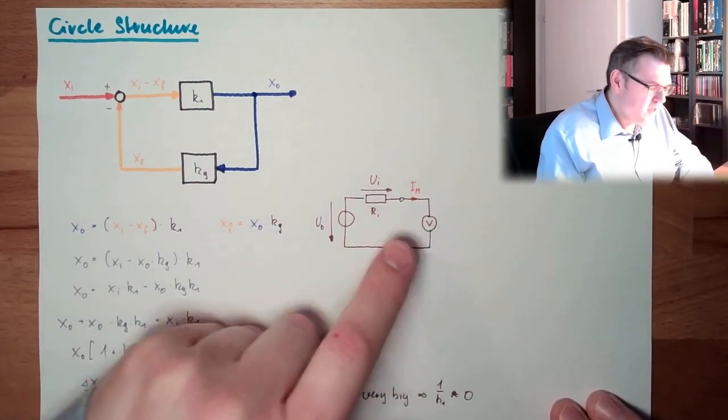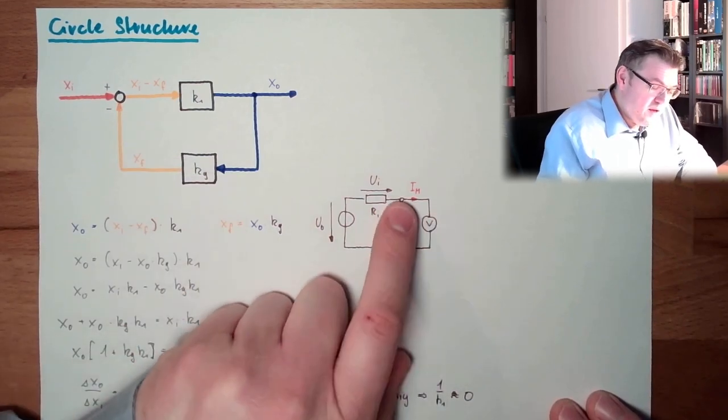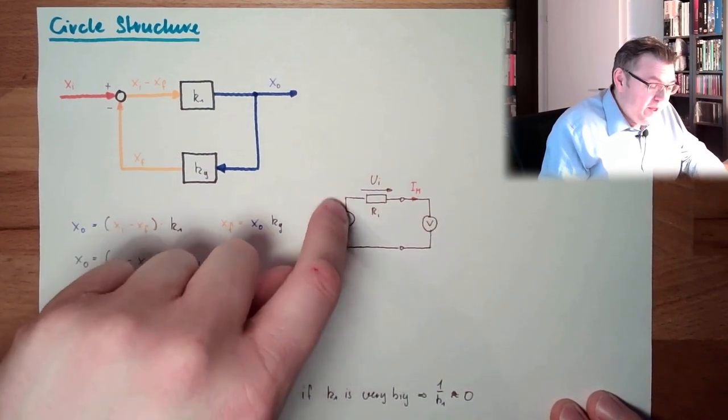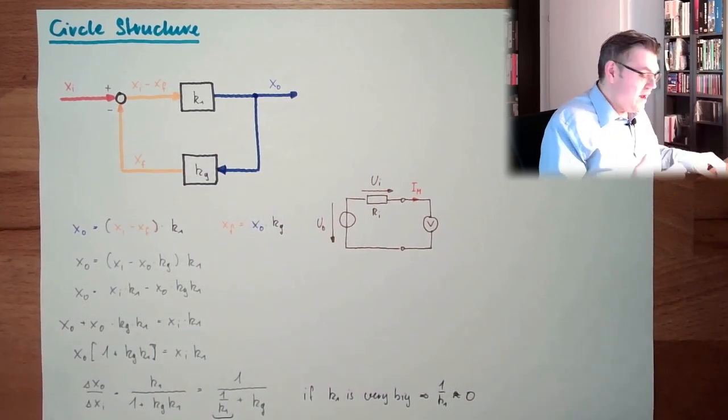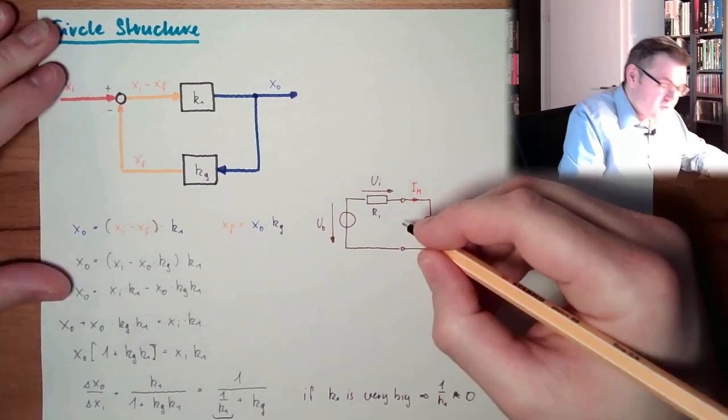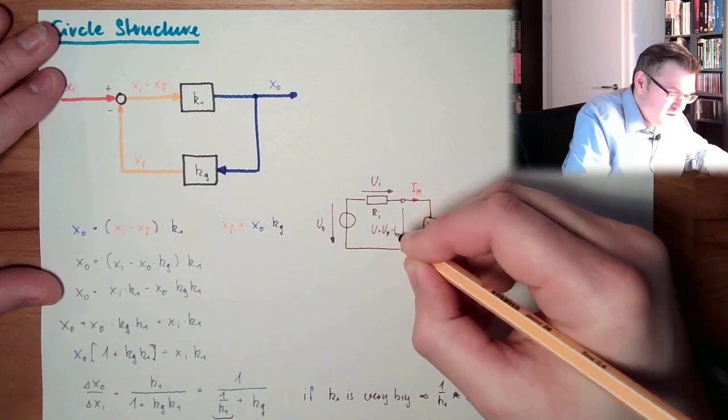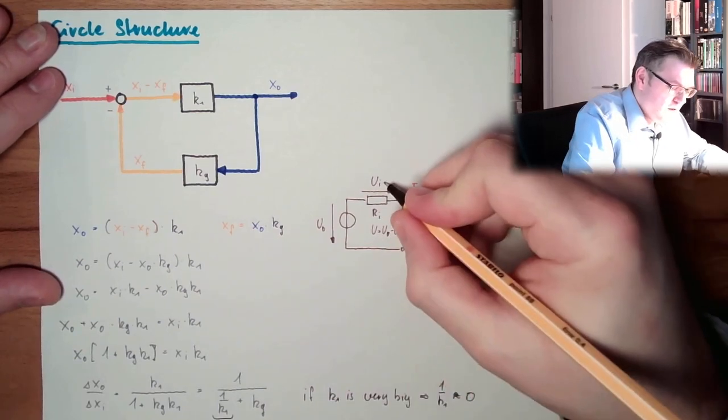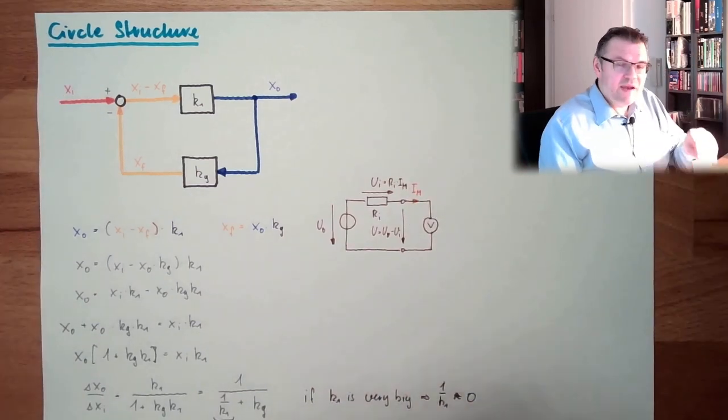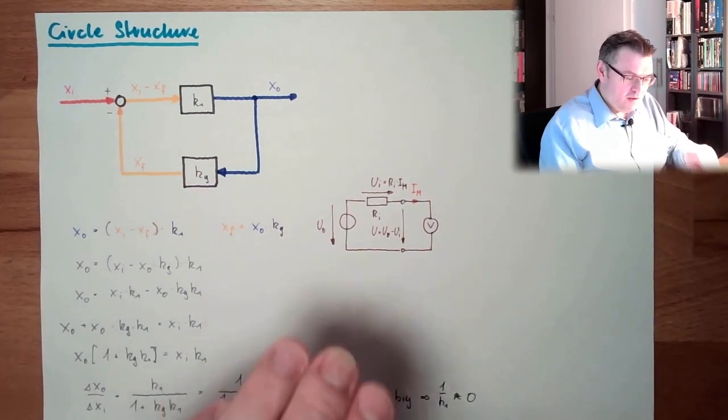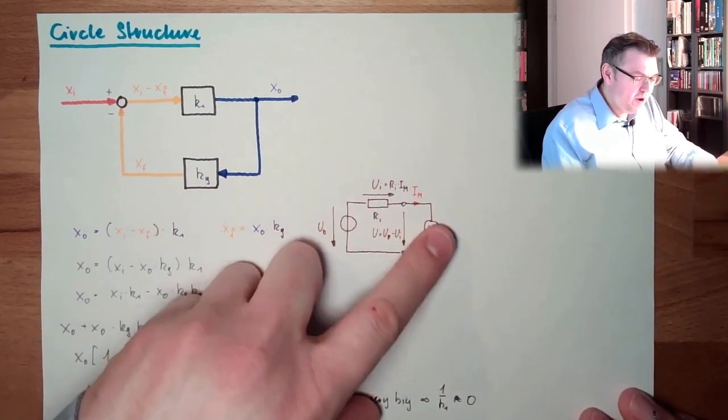So with my measurement, it's not like that. With my measurement, I influence the object and I'm not measuring the source voltage. I'm measuring here this voltage and U. And this is U0 minus UI. And this is RI multiplied by IM. So I make an error here. I make an error because I'm draining energy from this system.